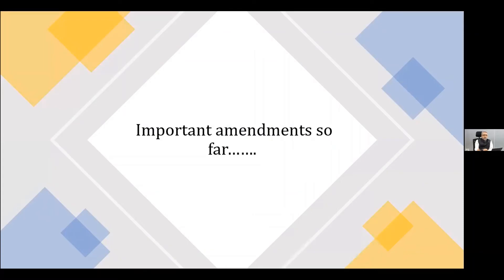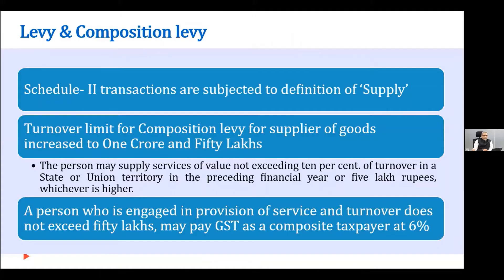Regarding important amendments: apart from the definition of supply, GST has a few schedules — Schedule 1, Schedule 2, and Schedule 3. Schedule 1 refers to transactions that will be subjected to GST even if you don't receive any consideration for them, which is a departure from the general definition of supply that requires consideration. So, if you supply goods and services in certain situations without receiving any consideration, that will still be subjected to tax.